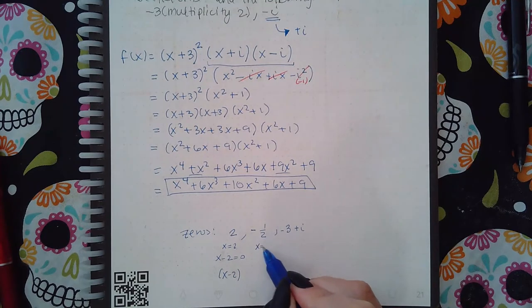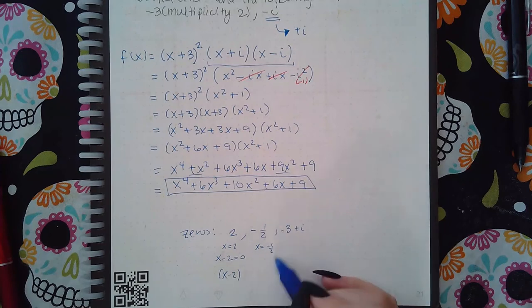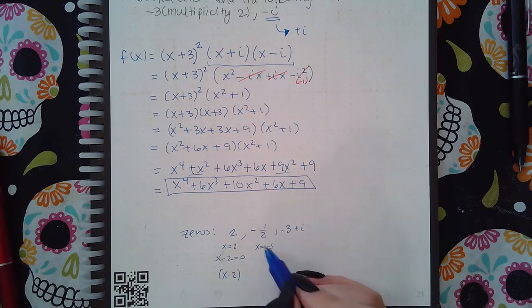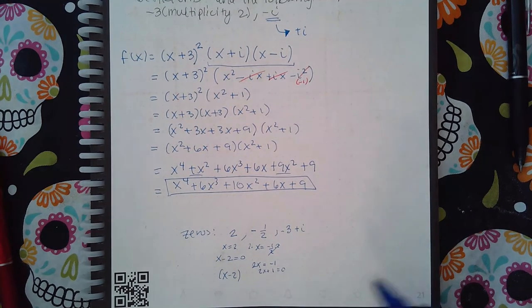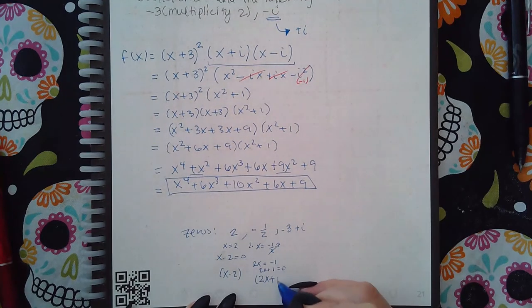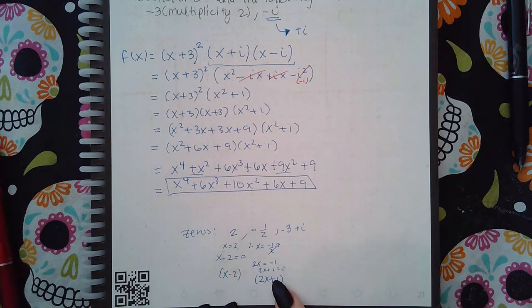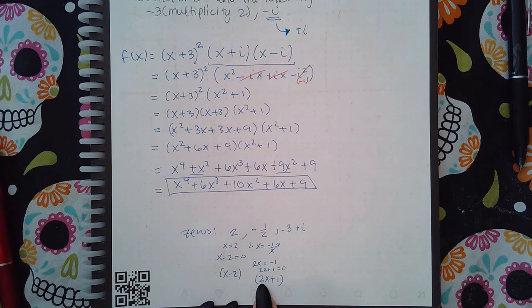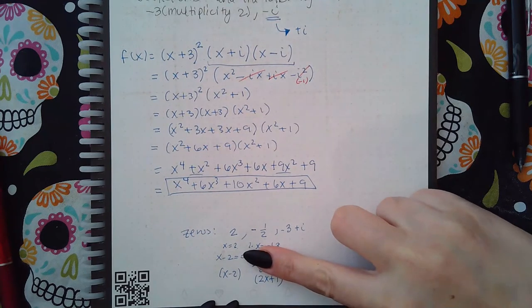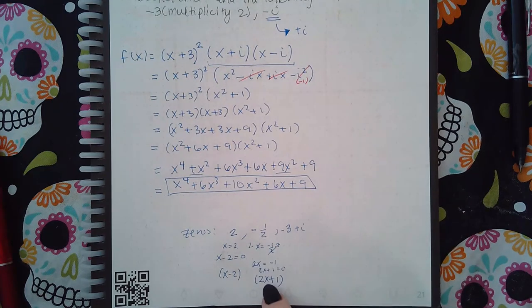Here you would have x equal to negative one-half. In order for me to get this equal to zero, first thing I would need to do is get rid of the fractions, so I would multiply both sides by the common denominator which is 2, and so then I get 2x equals negative 1. But I still need to get it equal to zero, so I would have to add one to both sides. So the factor here would be (2x+1).